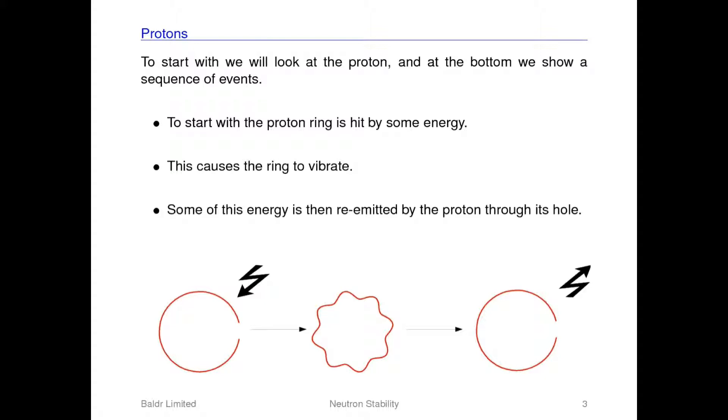Lastly, the proton re-emits a proportion of this vibrational energy through its hole before the whole process starts again. Thus the total energy captured by the proton cannot continuously grow since it is able to emit a proportion of this vibrational energy through its hole, and hence the proton is always stable.